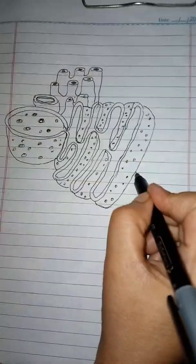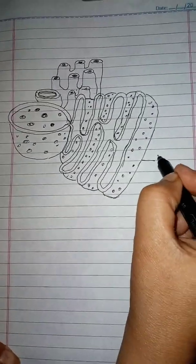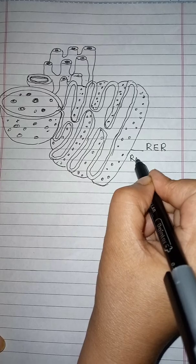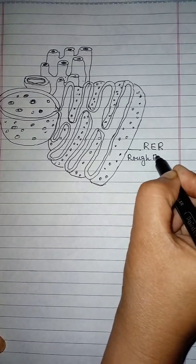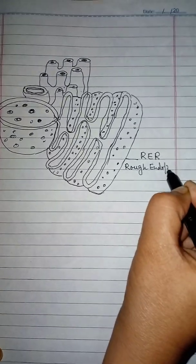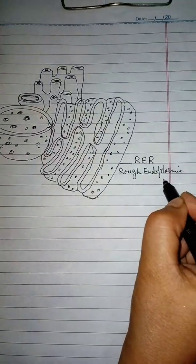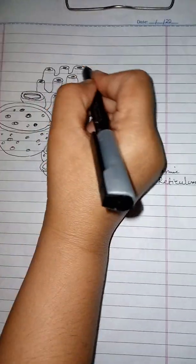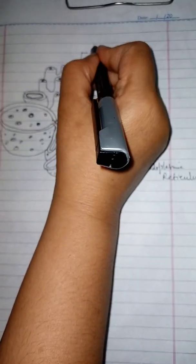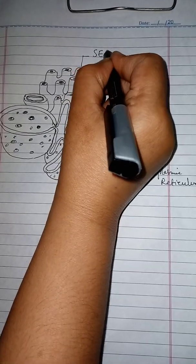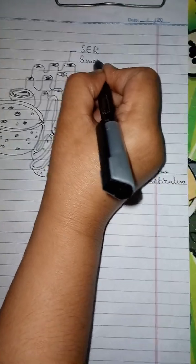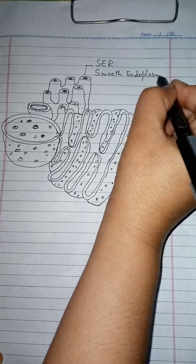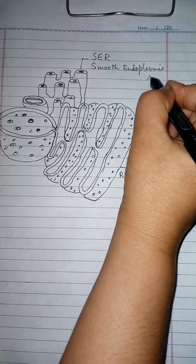Now let me label it. This is RER, which is actually rough endoplasmic reticulum. This is SER, smooth endoplasmic reticulum.